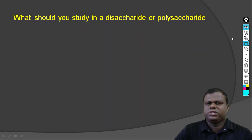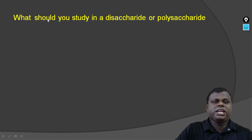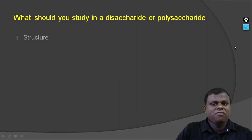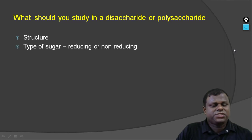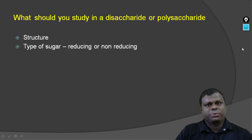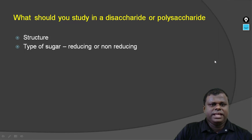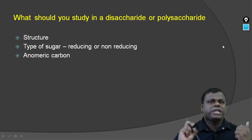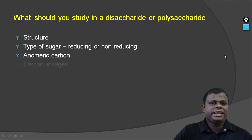Before we study a disaccharide or a polysaccharide, you are supposed to interpret the structure and understand certain structural aspects. What should you study in a disaccharide or polysaccharide? First is the structure — how exactly is the structure obtained, and the monosaccharide units. The next is type of sugar, whether it is reducing or non-reducing. Then the anomeric carbon — whether the anomeric carbon of all the monosaccharide units are free or any one which is not free, that you are supposed to know.